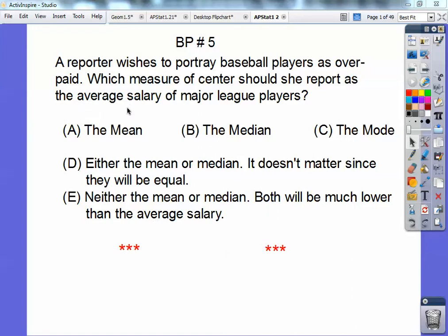Well, the key word is average, you guys. Average is a code word for mean. So it's choice A. Median is the middle salary. Mode is the most. The mean and the median, they're not always equal. And this one doesn't make sense either. So the key word is average. So it's mean.